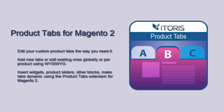The Product Tabs extension allows you to edit product tabs globally or per product using Visivik. You can easily add more custom tabs to products, translate them for different store views, or make tabs visible for certain customer groups. You can also add links, images, tables, and even product sliders into tabs via Magento's widgets.